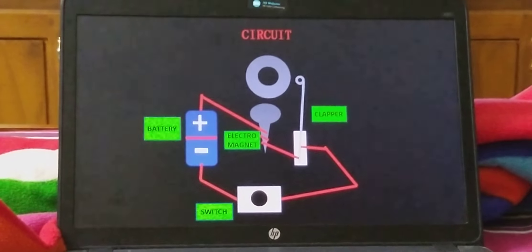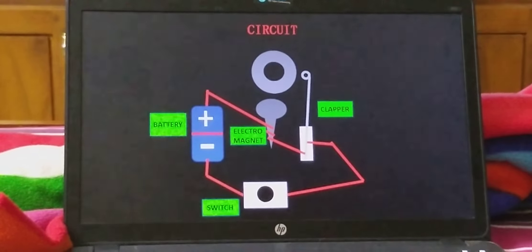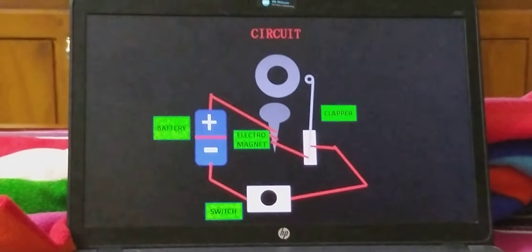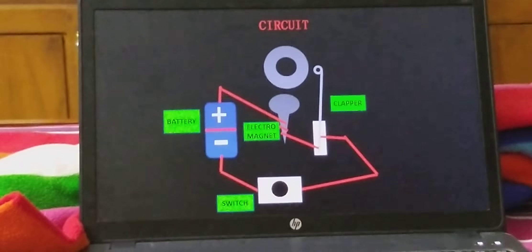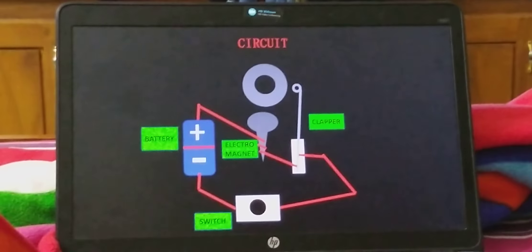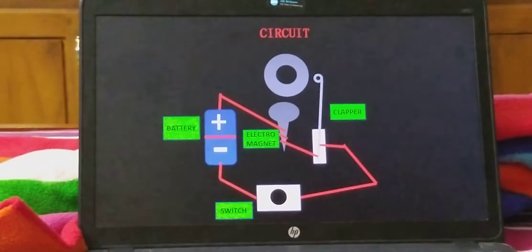From the positive side of the battery the wire goes directly to the electromagnet and from there it goes to the clapper. From the negative side of the battery it goes to the switch and from the switch it goes to the clapper.